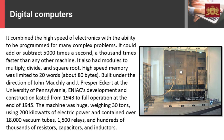It combined the high speed of electronics with the ability to be programmed for many complex problems. It could add or subtract 5,000 times a second, a thousand times faster than any other machine. It also had modules to multiply, divide, and square root. High speed memory was limited to 20 words, about 80 bytes. Built under the direction of John Mauchly and J. Presper Eckert at the University of Pennsylvania, ENIAC's development and construction lasted from 1943 to full operation at the end of 1945. The machine was huge, weighing 30 tons, using 200 kilowatts of electric power and contained over 18,000 vacuum tubes, 1,500 relays, and hundreds of thousands of resistors, capacitors, and inductors.